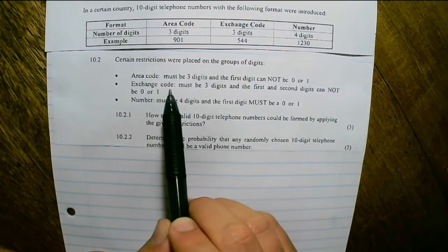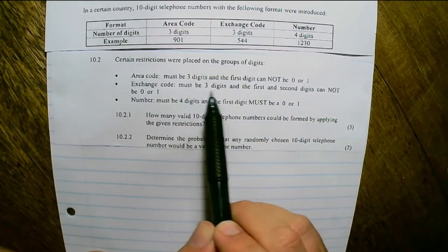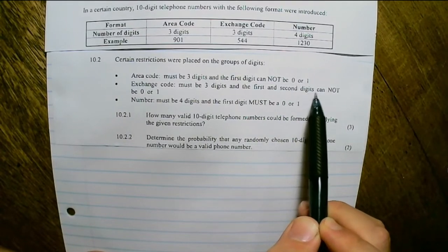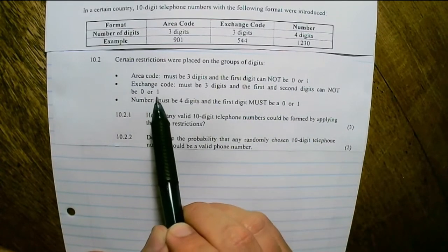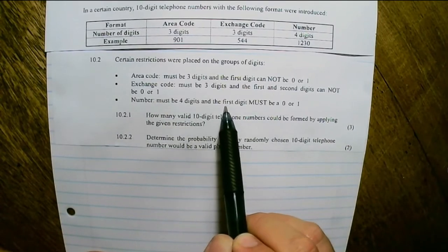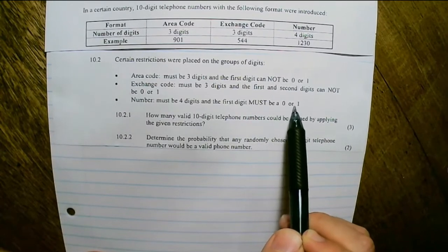The exchange code must be 3 digits and the first and second digits cannot be 0 or 1. The number must be 4 digits and the first digit must be 0 or 1.